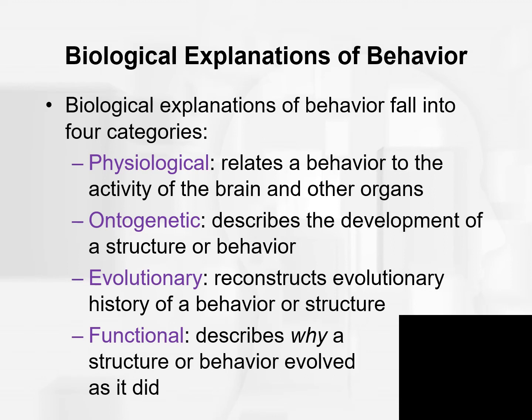An ontogenetic explanation of behavior describes the development of a structure or behavior. This can include physiological explanations and genetic background, but it also includes things like environment — how we develop psychologically. An ontogenetic explanation can span from conception to death.